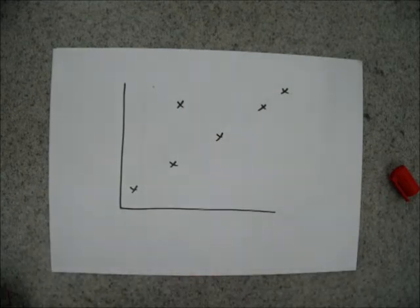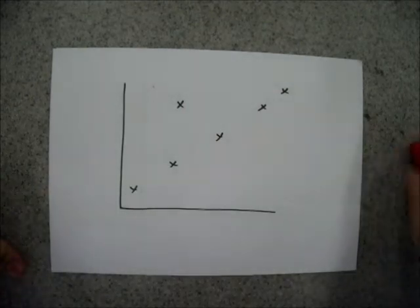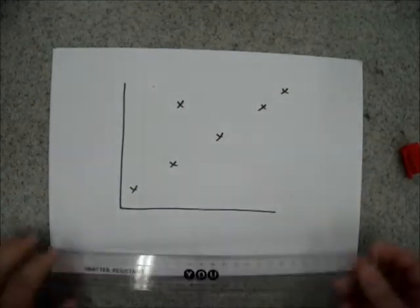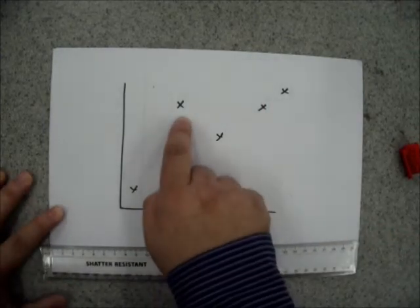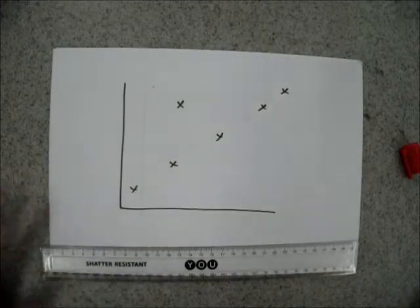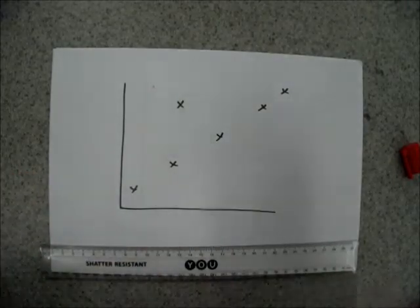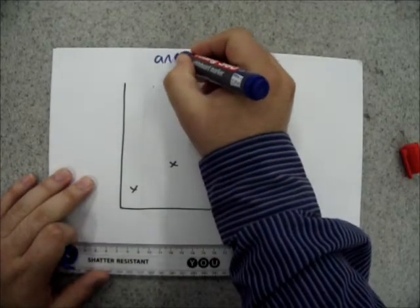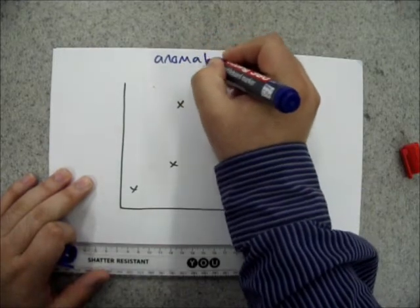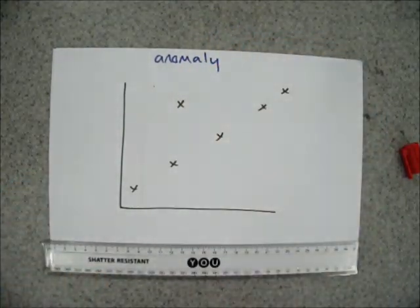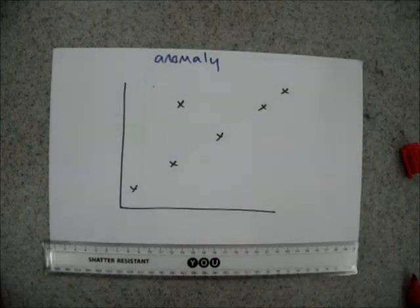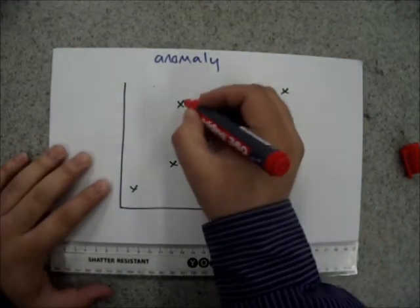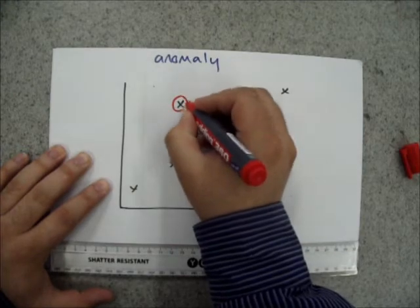Now, occasionally, you'll find that a single point does not follow the same pattern as the rest of the results. Like this one here. This is an anomaly. When drawing your line of best fit, ignore this point, and in order to show that you know it's an anomaly, circle it in pen.